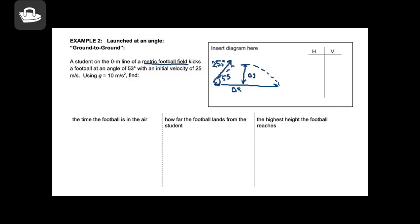The first thing I really want to do is break the initial launch velocity, v-naught, into its x and y components. V-naught-x is equal to 25 times the cosine of 53 degrees — make sure you're in degrees and not radians — and that equals about 15 meters per second. V-naught-y is equal to 25 times the sine of 53 degrees, which gives you 20 meters per second.